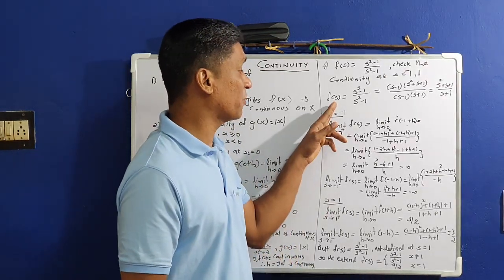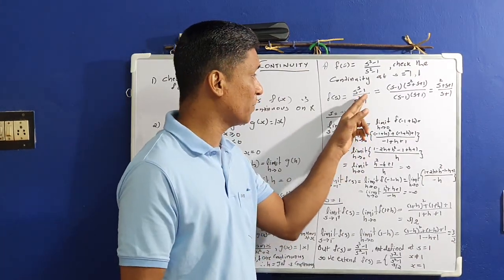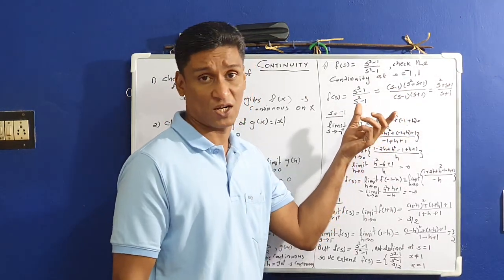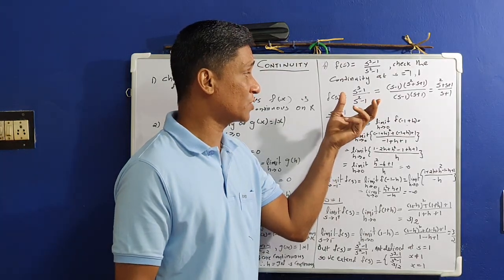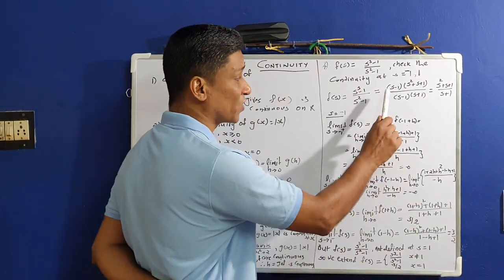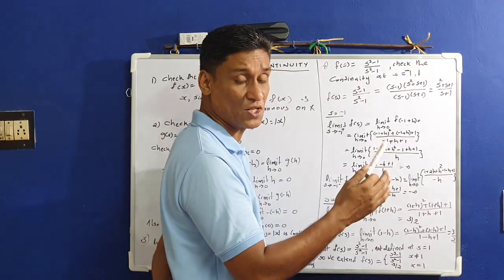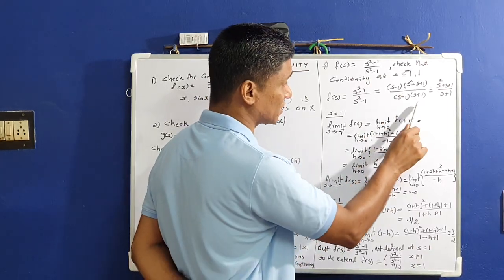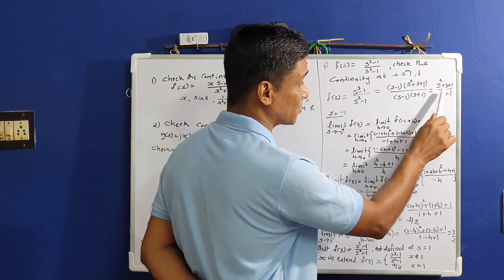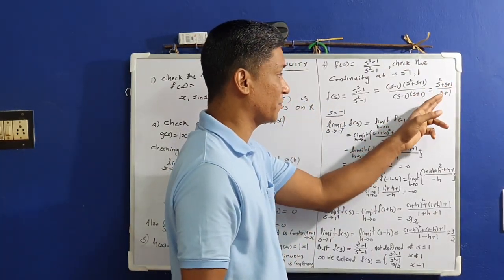Our function is f(s) = (s³−1)/(s²−1). We simplify: s³−1 = (s−1)(s²+s+1) using the factorization a³−b³ = (a−b)(a²+ab+b²). Also s²−1 = (s−1)(s+1). The (s−1) factors cancel, giving f(s) = (s²+s+1)/(s+1). This is the simplified form.